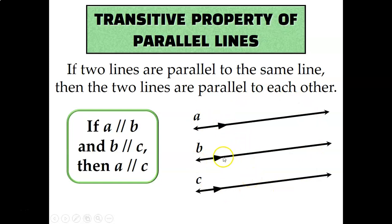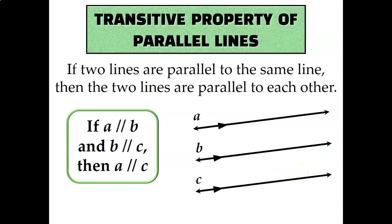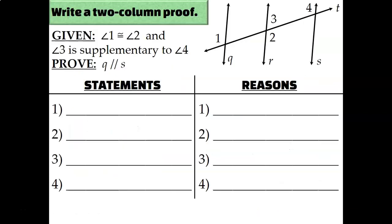Since A and B are parallel, and C and B are parallel, C and A are both parallel to B, and therefore all three lines are parallel. Let's use this property to write some proofs.